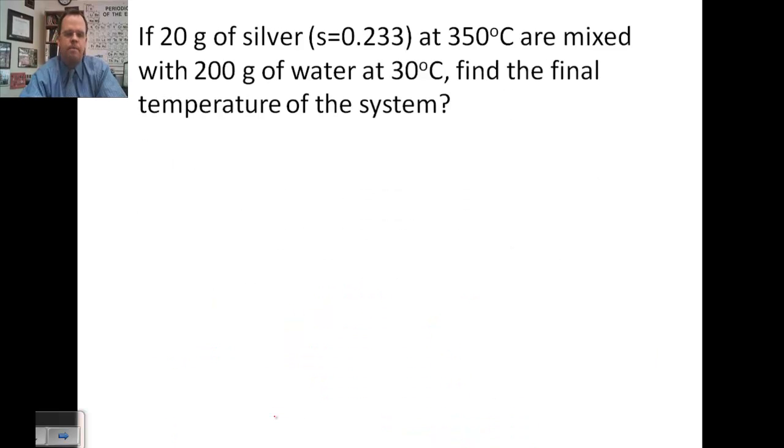Finally, one last example. 20 grams of silver with specific heat of 0.233 at 350 degrees Celsius are mixed with 200 grams of water at 30 degrees Celsius. What is the final temperature? We know the silver is going to be the one to lose heat here because it starts at the higher temperature. And we know the water is going to gain the heat.